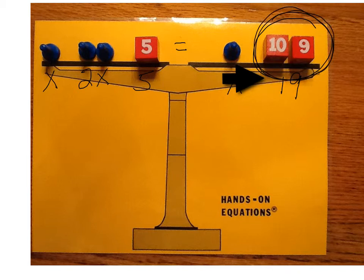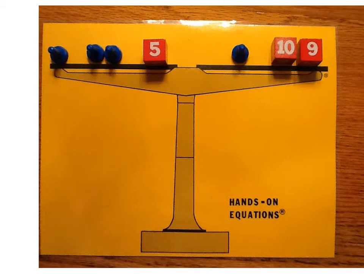So we're set up x plus 2x plus 5 is equal to x plus 19. So our first step in trying to see if we can get the variable on one side is to look and see if we have anything on each side that is the same.